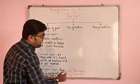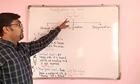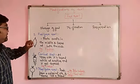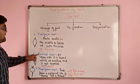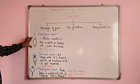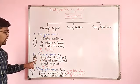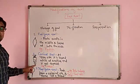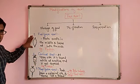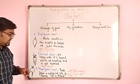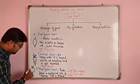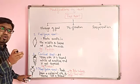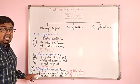So friends, for tap root there are three types of modifications: storage of food, nitrogen fixation, and respiration. In storage of food, there are three different modifications: fusiform, conical, and napiform. In fusiform, the root swells in the middle and tapers at both ends — example is Radish. In conical, at one end it is broader and at the other end it tapers — example is Carrot. In napiform, a spherical structure forms and it tapers like a thread — example is beetroot.